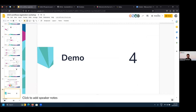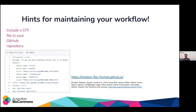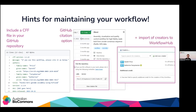Coming back to the slides, here are some hints for maintaining your workflow. First, include a Citation File Format (CFF) file in your GitHub repository. This activates GitHub's cite-this-repository option so anyone finding your repository can easily see how you want your work cited. It also impacts import to Workflow Hub — if you have a CFF file in your repository, Workflow Hub can automatically extract creator information from it.